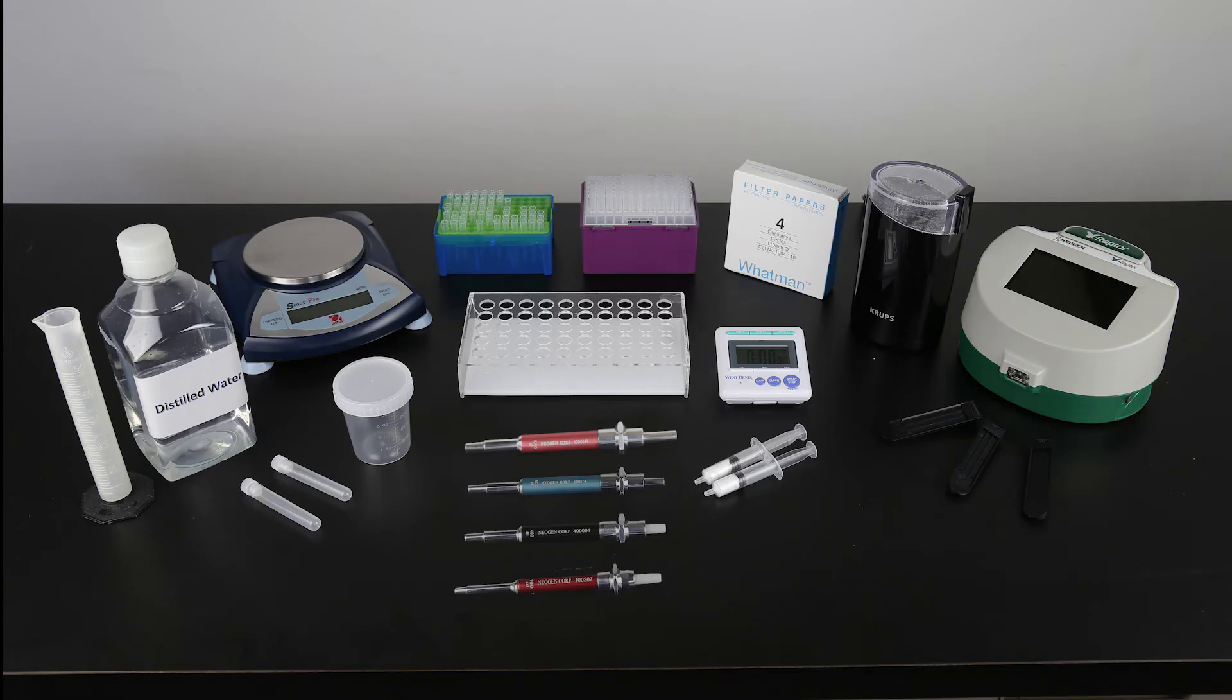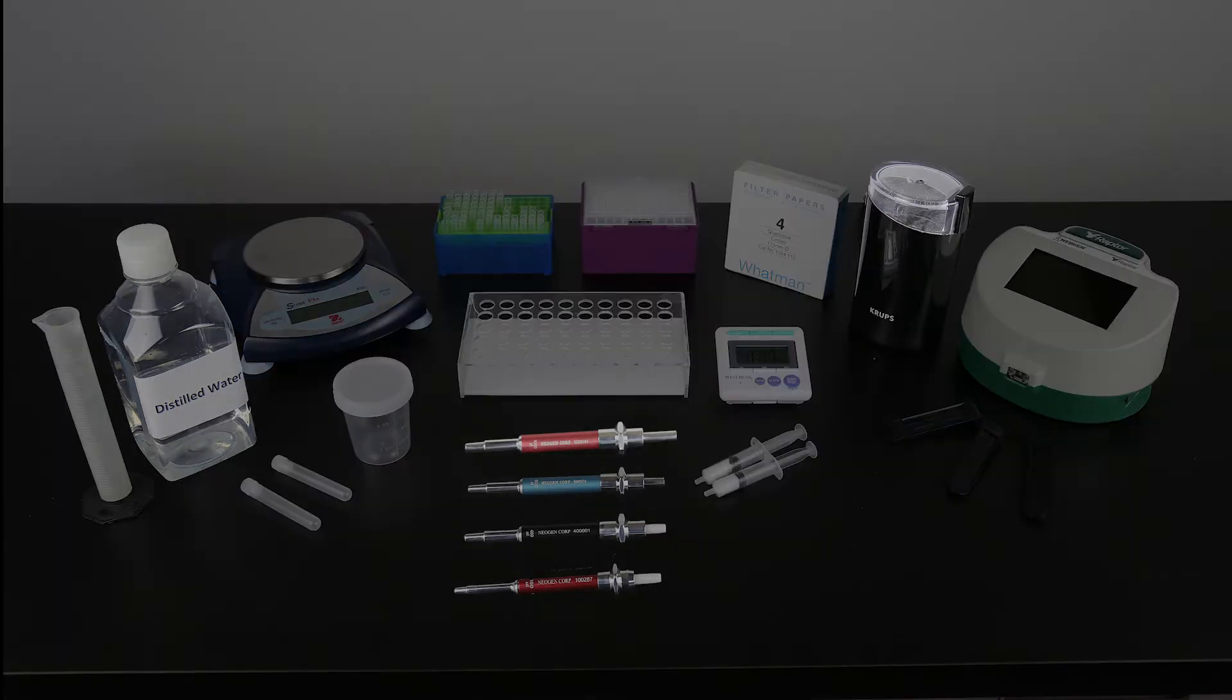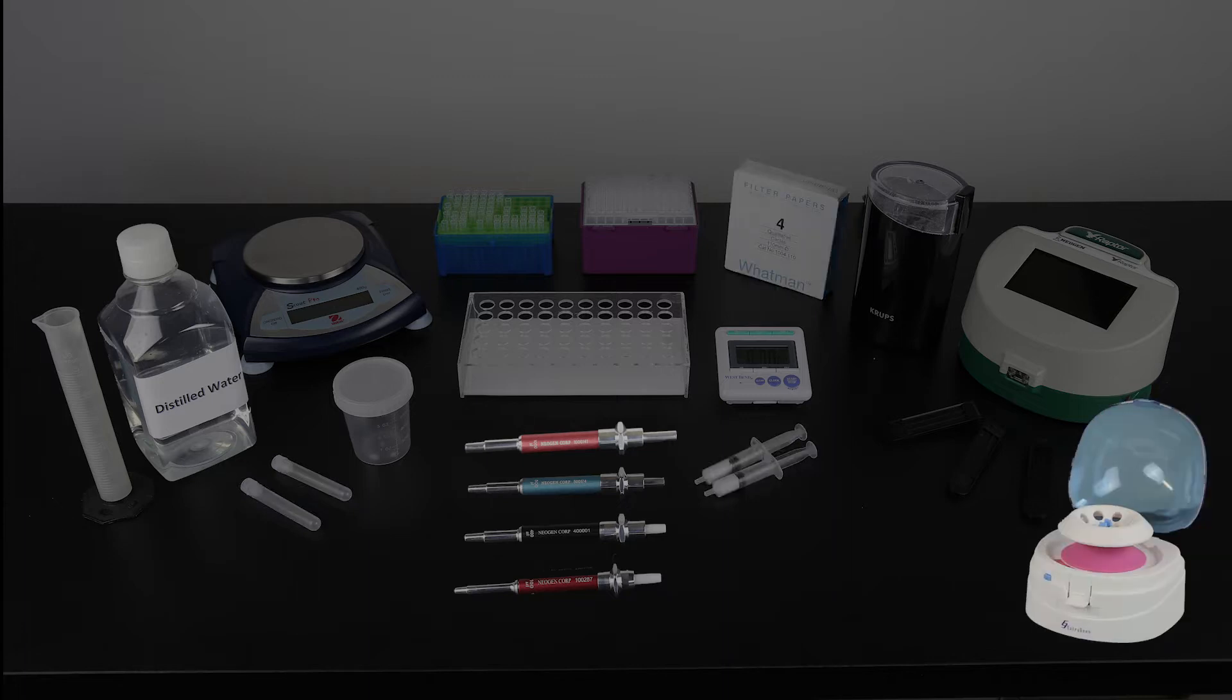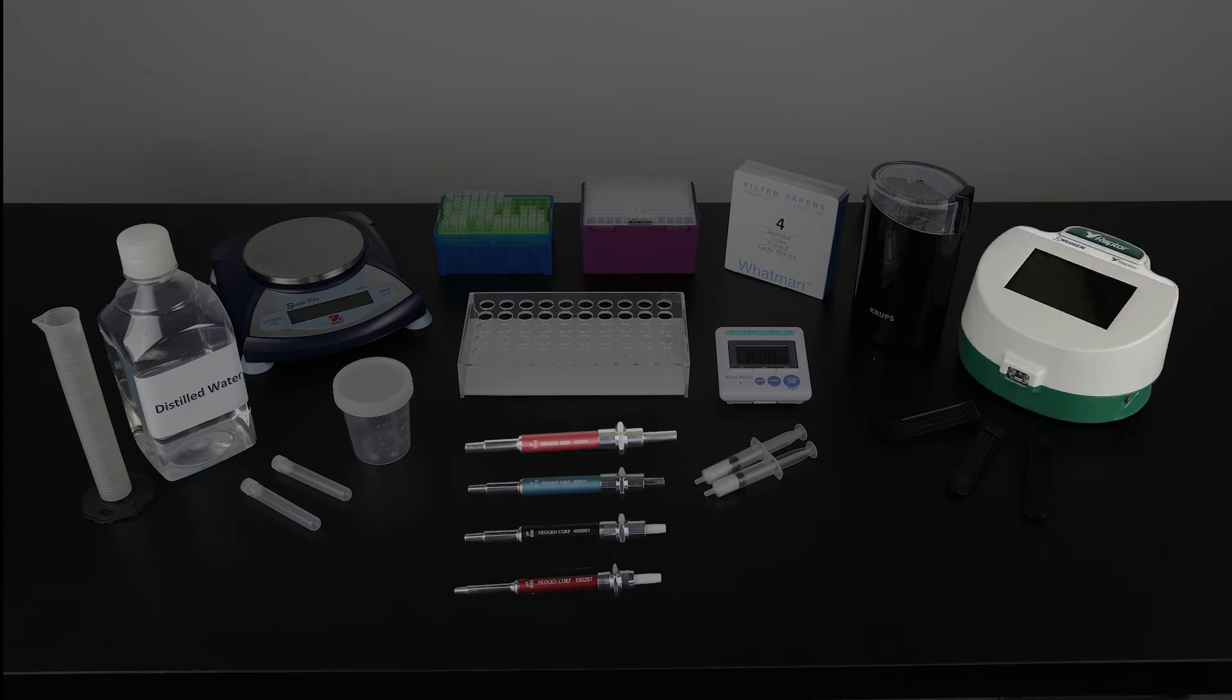To conduct the test, you will also need an Agri-Grind or equivalent grinder, a scale capable of weighing 10 grams accurate plus or minus 0.1 gram, a timer, a Reveal sample cup rack, 50 milliliter graduated cylinder, 65% ethanol solution, a 100 microliter, 400 microliter, and 500 microliter pipetter and tips, sample collection cups and lids, sample collection tubes and caps, filter syringes, Wattman number 4 filter paper or mini centrifuge and tubes, a Raptor integrated analysis system, and Raptor cartridges.